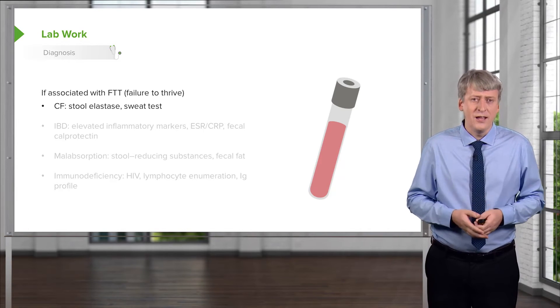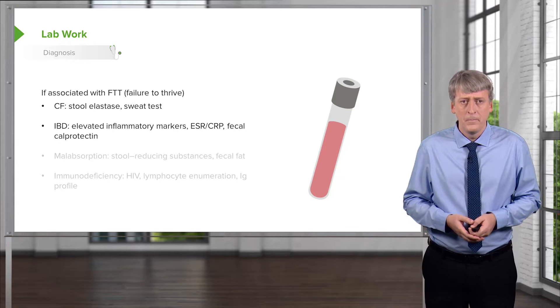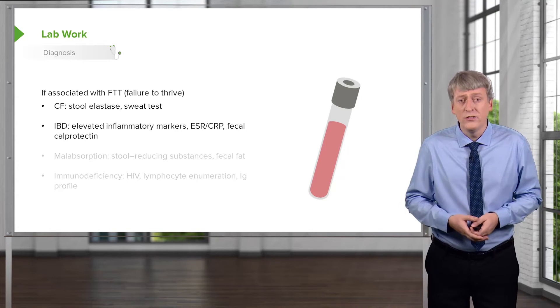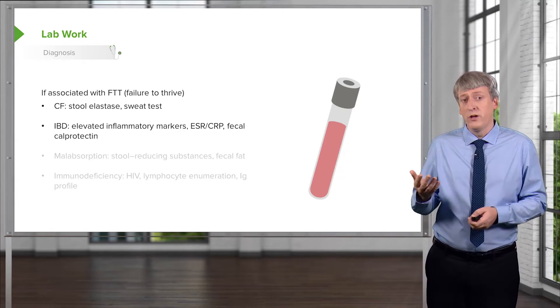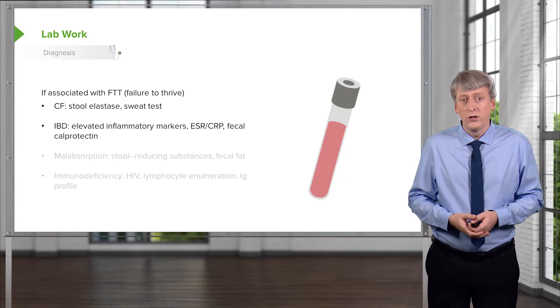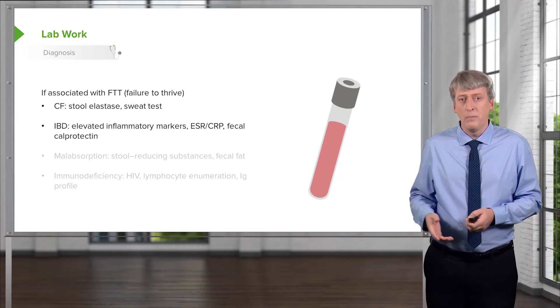But the cheapest and easiest test is simply a sweat test. For inflammatory bowel disease patients, we might check for elevated inflammatory markers such as the ESR, the sed rate, or the CRP.